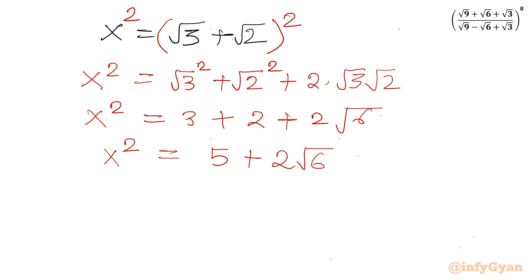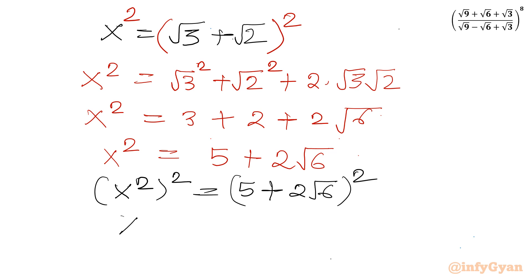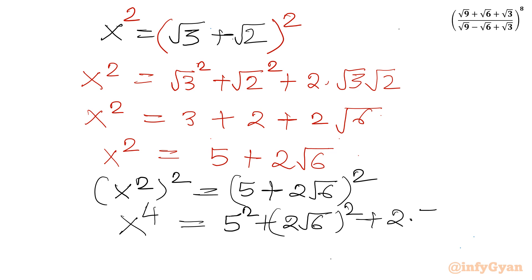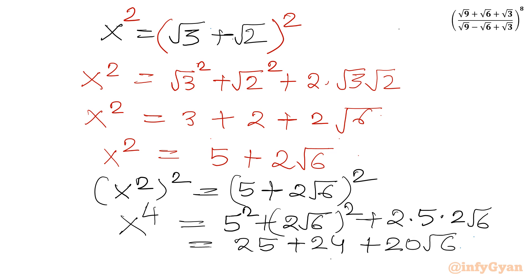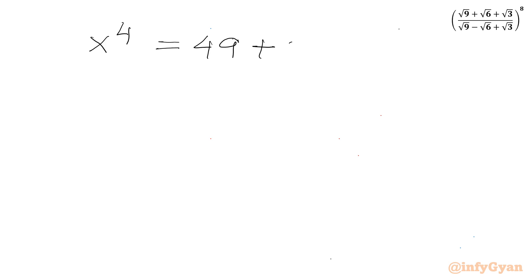Again we square both sides: (x²)² = (5 + 2√6)². The left-hand side becomes x⁴. The right-hand side using (a + b)² gives a² + b² + 2ab = 25 + 4×6 + 2×5×2√6 = 25 + 24 + 20√6. So x⁴ = 49 + 20√6.